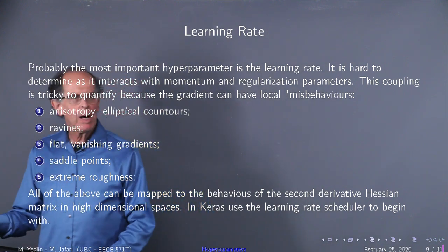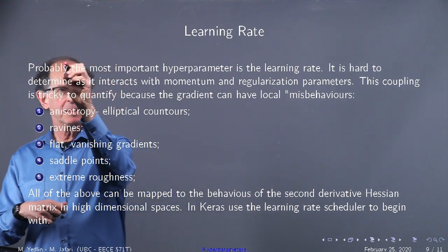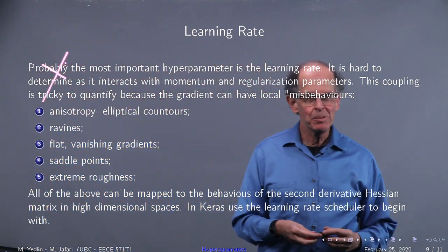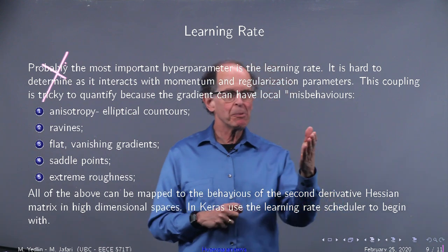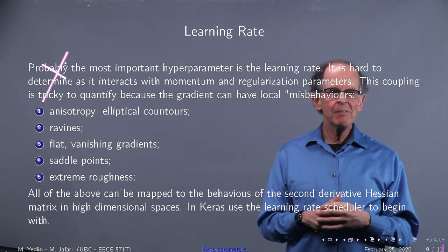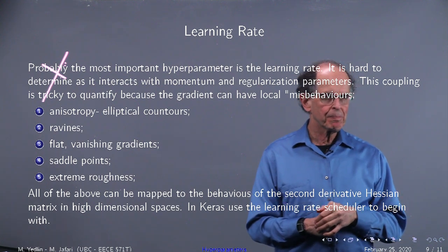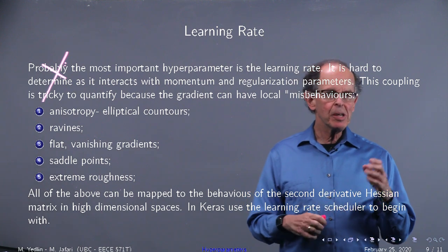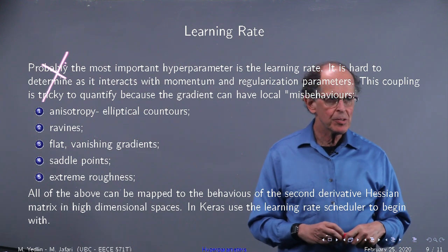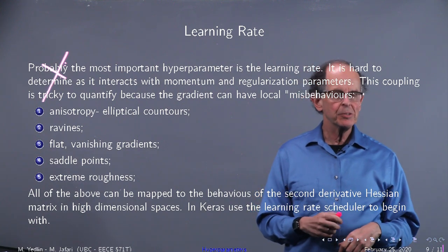Here it is. I made a mistake here. This is the worst typo I've done. Forget about probably. It's not probably. I did that on purpose obviously. It is the most important hyperparameter, the learning rate. And as we mentioned before, misbehaviors of the gradient, and they're listed for you there, can all mess things up. So the mess up is due to the second derivative Hessian matrix behaving badly in high dimensional spaces. Suggestion here in Keras: use the learning rate scheduler to start with.